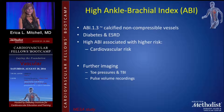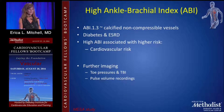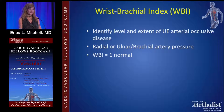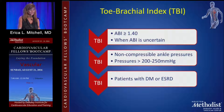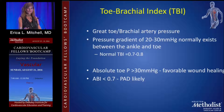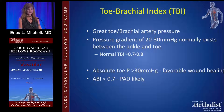A higher ABI can also be abnormal — these patients usually have diabetes or end-stage renal disease with non-compressible, calcified vessels. That's when you need further imaging, including a TBI (toe-brachial index). The wrist-brachial index is normally 1.0. TBIs are used for patients with calcified vessels, particularly those with diabetes and end-stage renal disease. The pressure difference between ankle and toe should be about 20–30 mmHg, making a normal TBI 0.7–0.8. An absolute toe pressure less than 30 mmHg indicates poor healing ability.